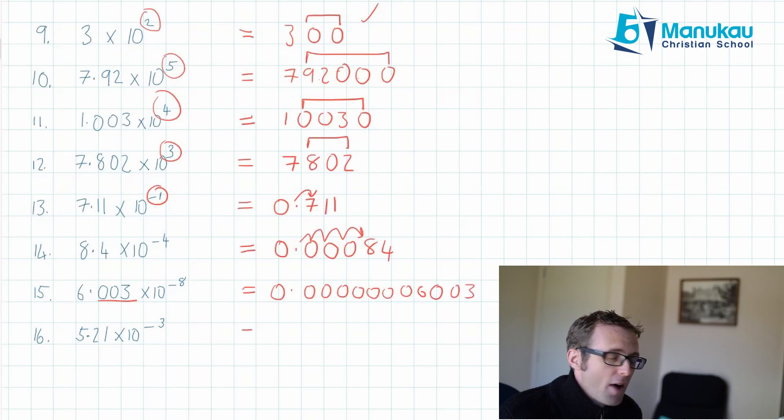Last one. 5.21 times 10 to the negative 3. We write 0 point. And then we've got 00. And then our 5 appears on the third place from our decimal point. Third place. So 1, 2, 3. Correct. And then we've got to add in these other digits after it. So 2, 1. And we are done.